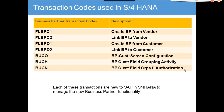The next ones are for creating a business partner from a vendor that has already been created. FLBBC2 lets you link an existing BP to a vendor. Similarly, you can create a BP from a customer and link a BP to a customer.